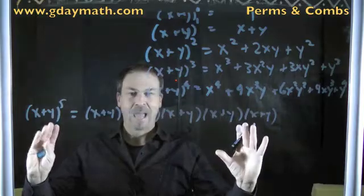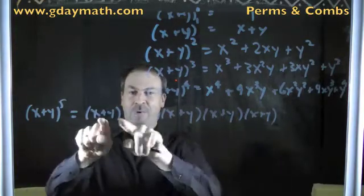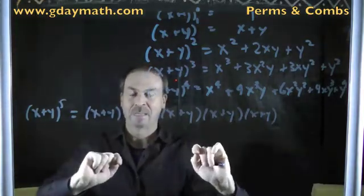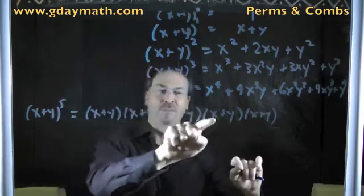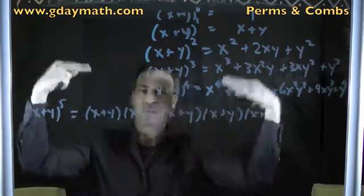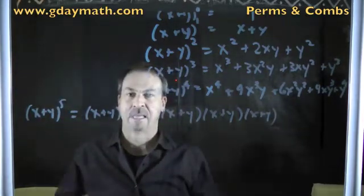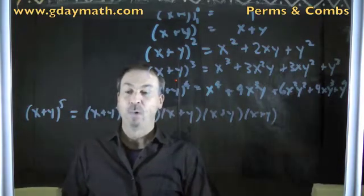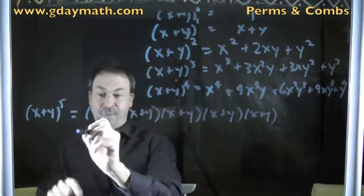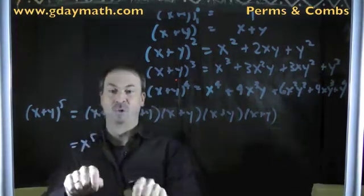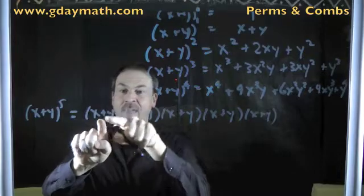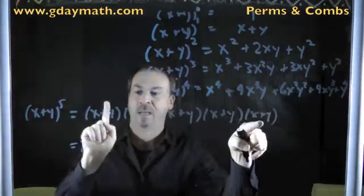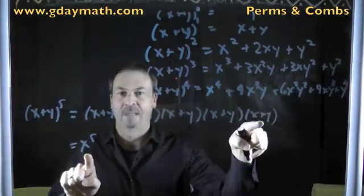How do you expand something? What do you need to do? I've got five sets of parentheses here. Basically, I need to select one term from each set of parentheses and go through all the possible combinations and add them up — that's what it means to expand brackets. I will get x to the 5th by choosing an x from each set of parentheses. There will be exactly one x to the 5th term.